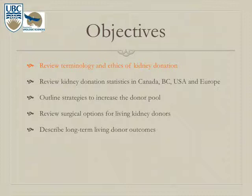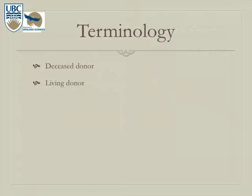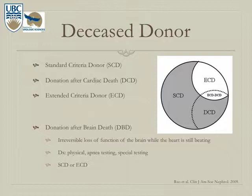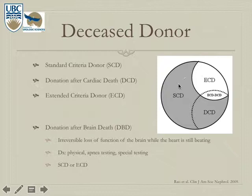In terms of terminology and ethics, there are deceased donors and living donors. For deceased donors, there are terms that get thrown around: standard criteria donors, donation after cardiac death, and extended criteria donors. There's also donation after brain death, which encompasses both standard criteria donors and ECD donors, depending on criteria fulfilled.